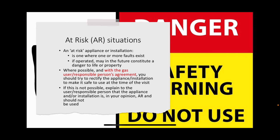The other category of unsafe situation - there are only two categories: immediately dangerous and at risk. An at-risk appliance is one where one or more faults exist and if operated may in the future constitute a danger to life or property. For example, if you've got an oven built into a worktop and you notice it's burning around the combustible wood either side - the worktop is starting to get scorched - that's an at-risk situation. It's not immediately going to kill anybody, but given time it's going to set fire to the worktop.